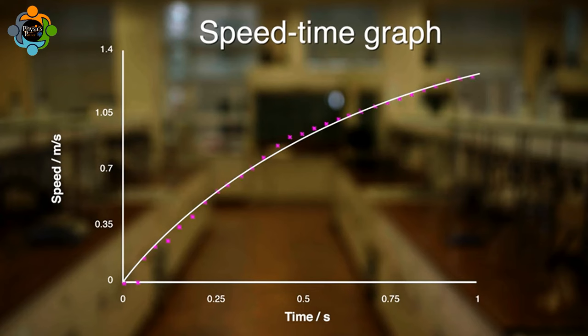The steep gradient of the graph shows that the speed of the car is increasing rapidly. Here the gradient is shallower, showing that the speed of the car is increasing less quickly. What would the speed-time graph look like if the car slowed down or came to a stop?